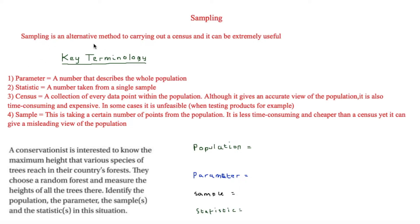There is some key terminology we need to know. A parameter is the number that describes the whole population, taken from a census. A statistic, however, is a number taken from a single sample.